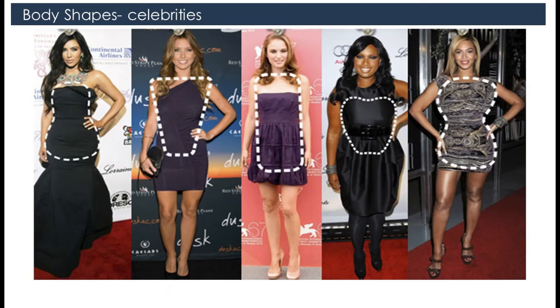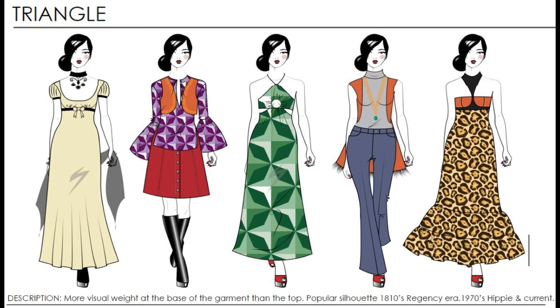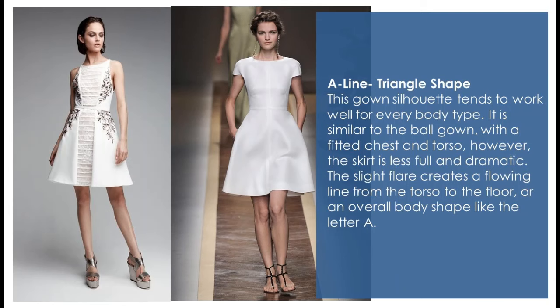These are five celebrities who have very different body shapes. First, let's discuss the triangle. A triangle shape has more visual weight at the base of the garment than the top. The A-line triangle shape gown silhouette tends to work well for every body type. It is similar to the ball gown with a fitted chest and torso, however the skirt is less full and dramatic — the slight flare creates a flowing line from the torso to the floor, forming the shape of the letter A.